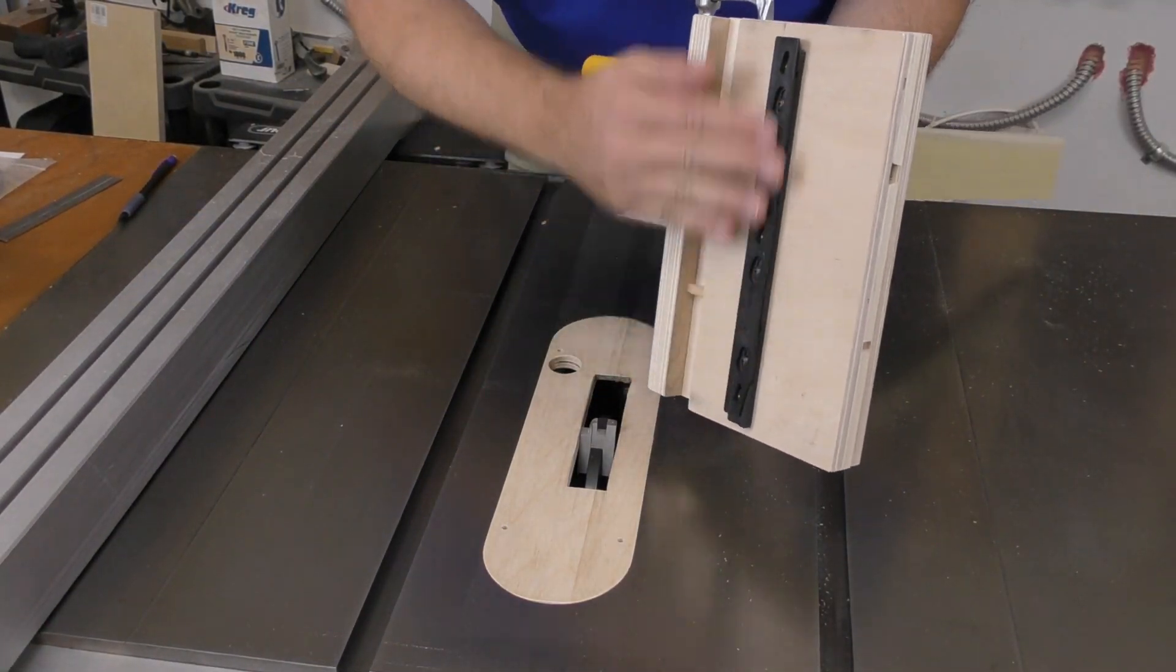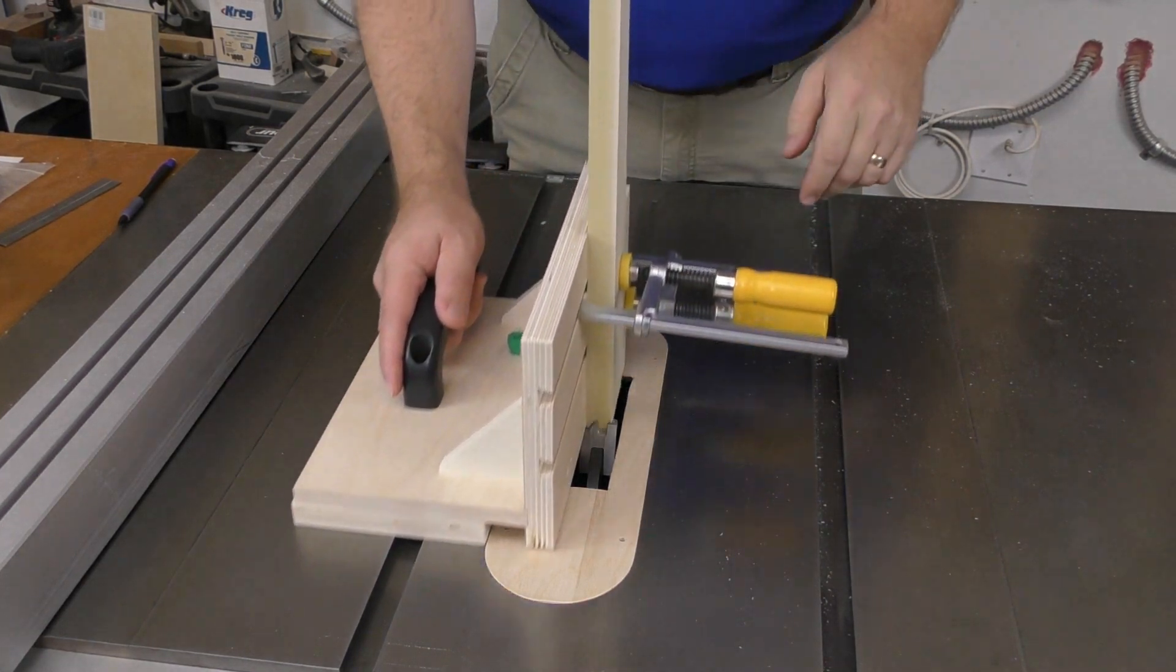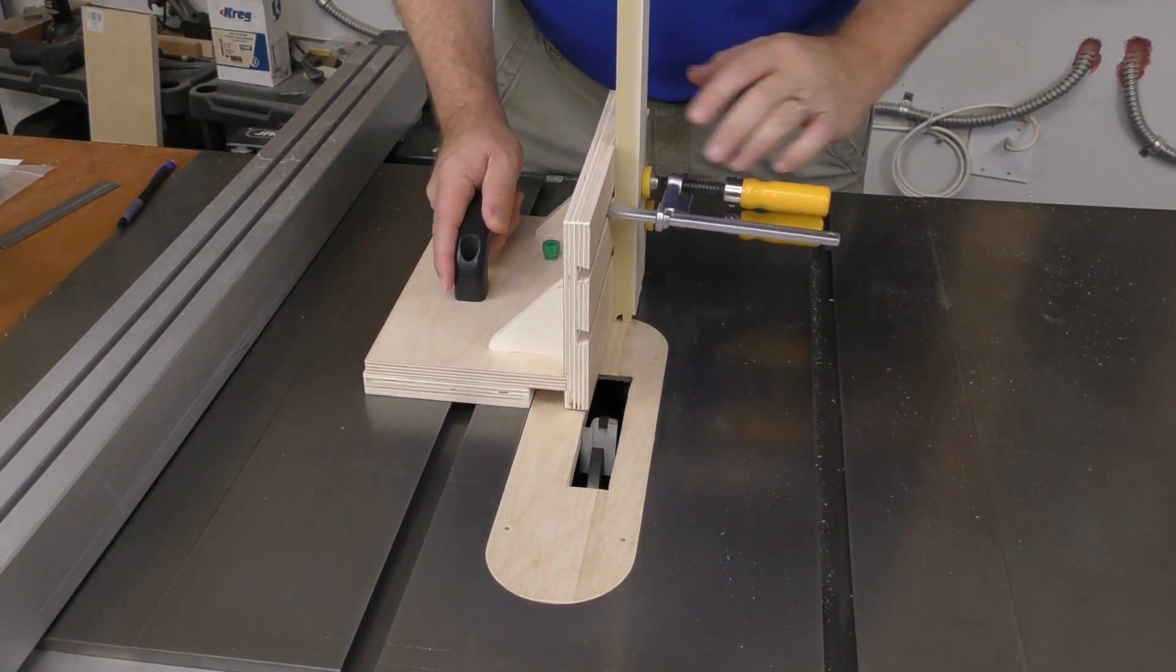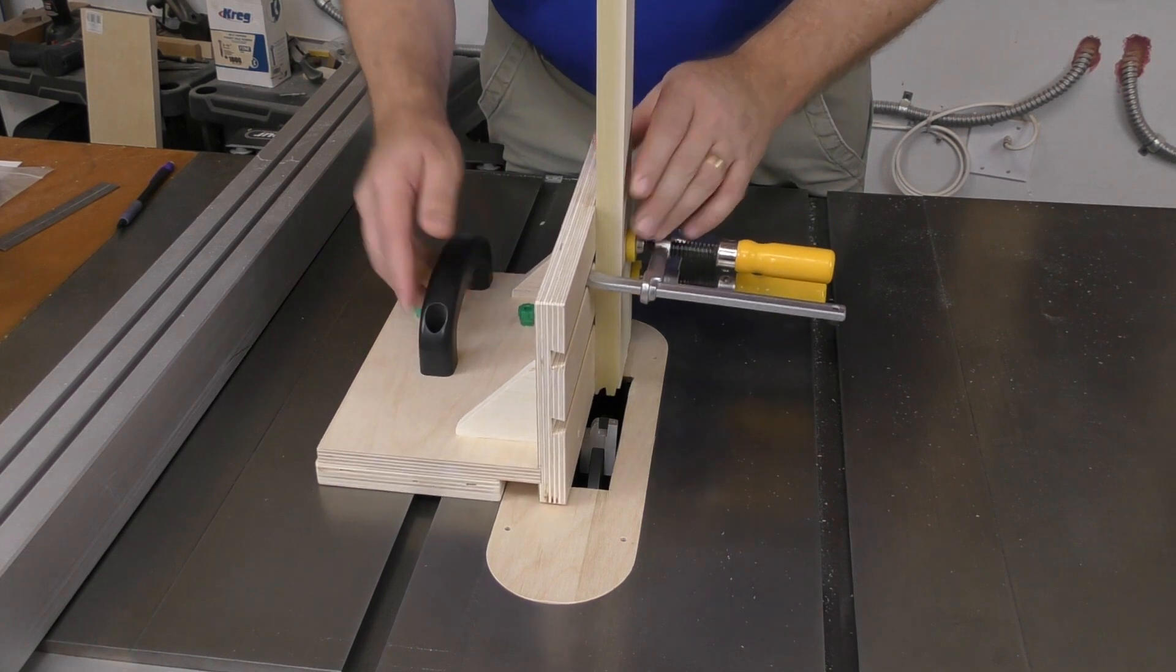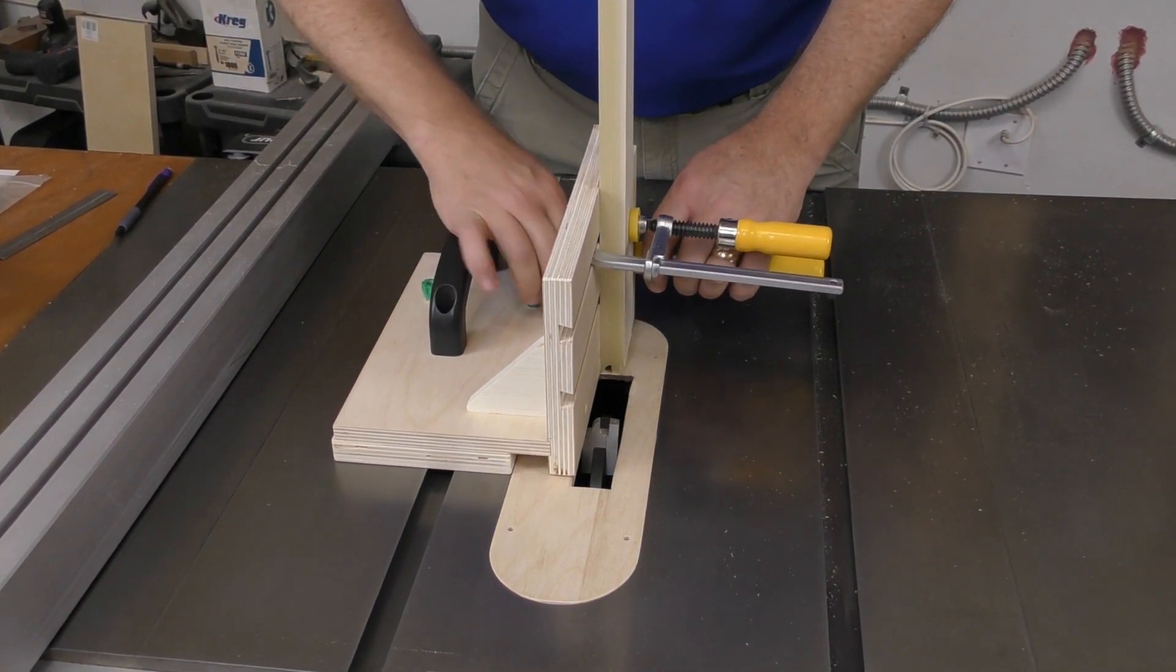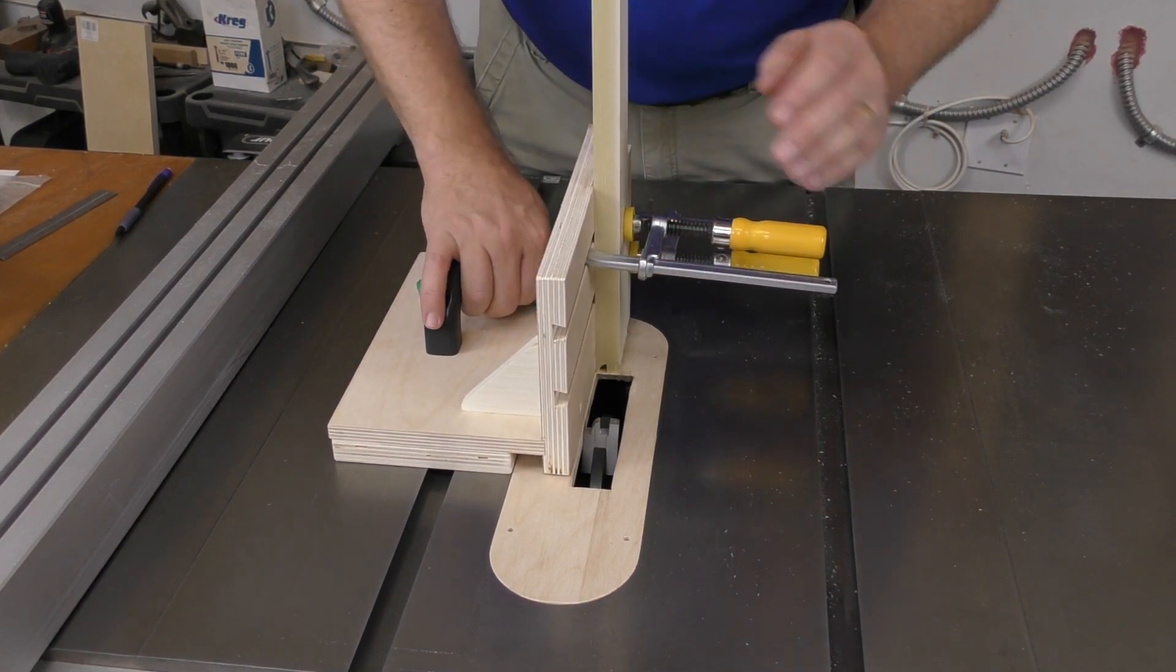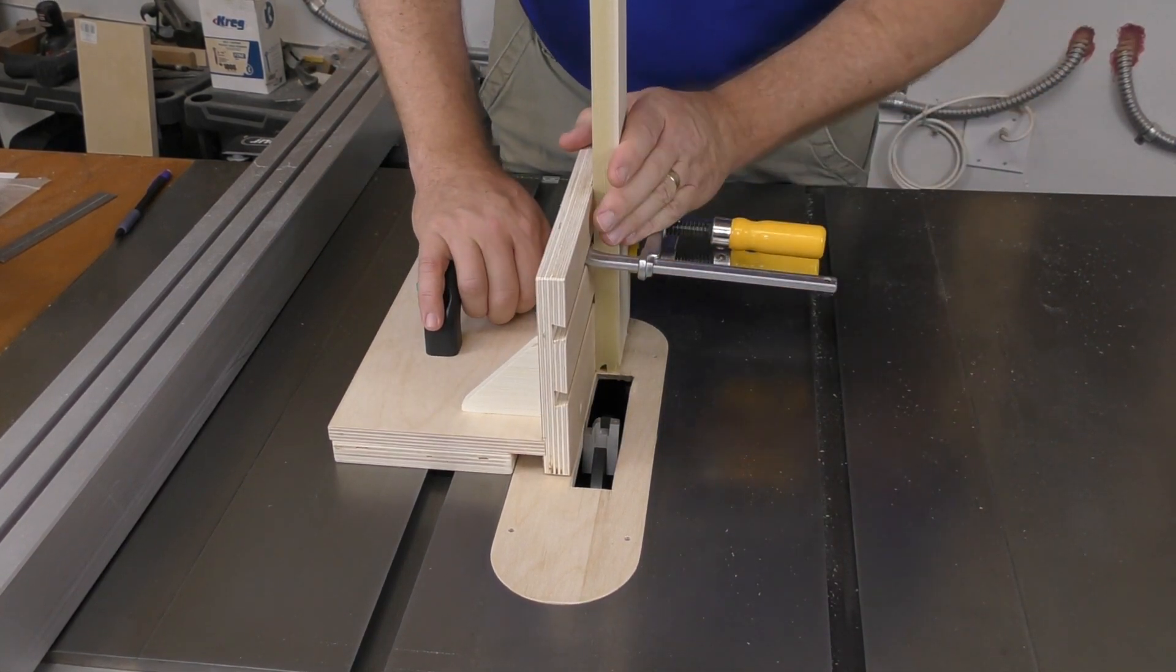This sled works with the zero play guide bar from Microjig, which allows me to set it into my miter slot and have no play side to side, which is deeply important. We're going to use a little bit of their hardware as well, their dovetail hardware, to allow the thing to slide side to side, and of course the dovetail clamps to hold our parts in place.